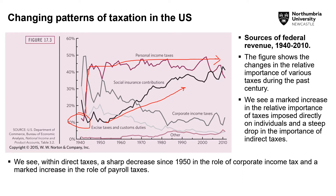On the other hand, corporate income taxes have fallen, potentially attributable to the fact that companies have been given favorable tax rates to encourage them to operate within a specific country. Excise duties have also fallen. There has been a slight increase in other sources of revenues. That is what the composition of revenue sources looks like and how it has changed between the 1940s and 2010.